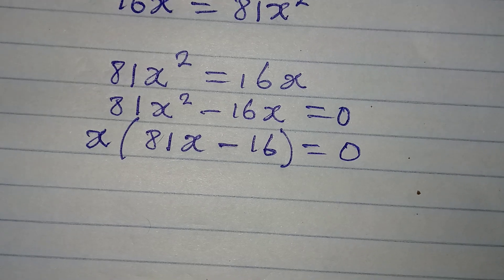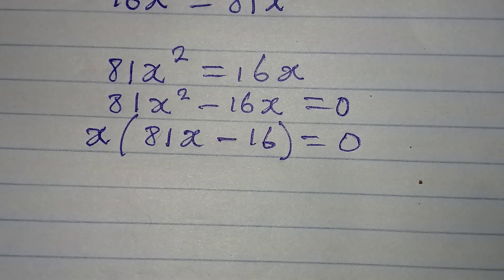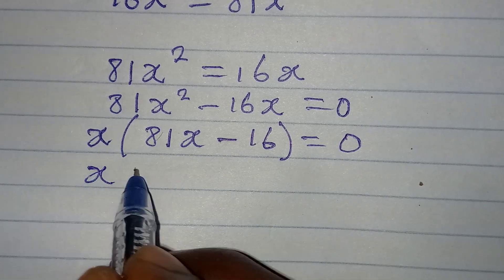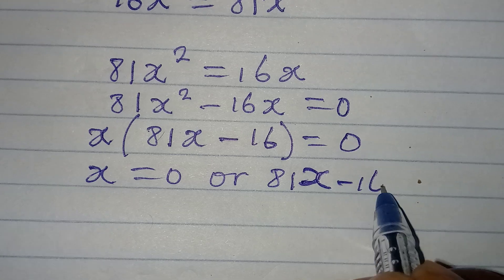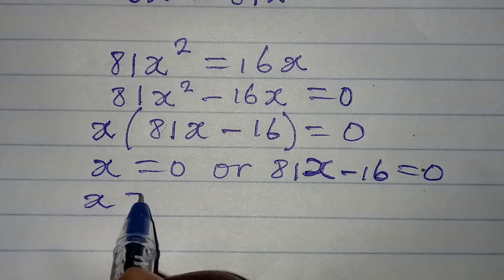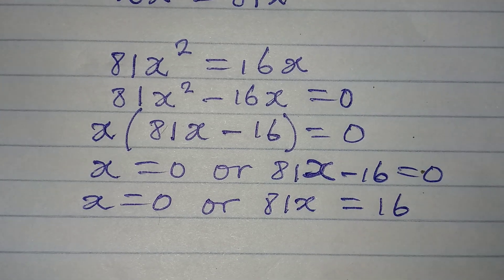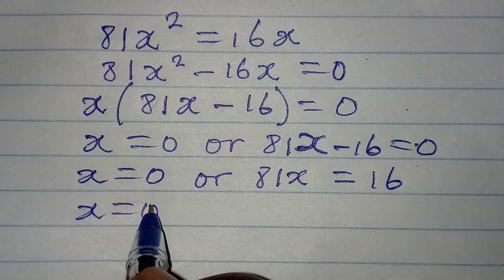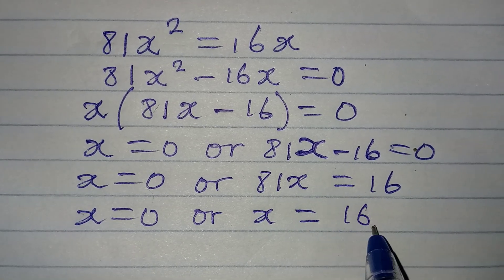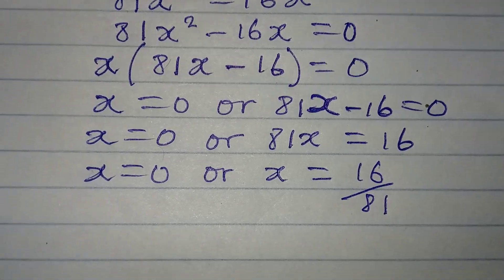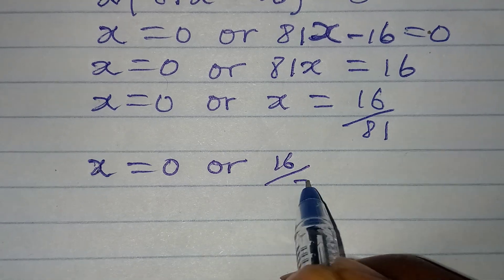If you're getting this, please subscribe to my channel and turn on the notification button. Now let's apply our zero product rule: it is either x equals 0, or 81x minus 16 equals 0. So x remains 0, or 81x equals 16, meaning x equals 16 over 81.